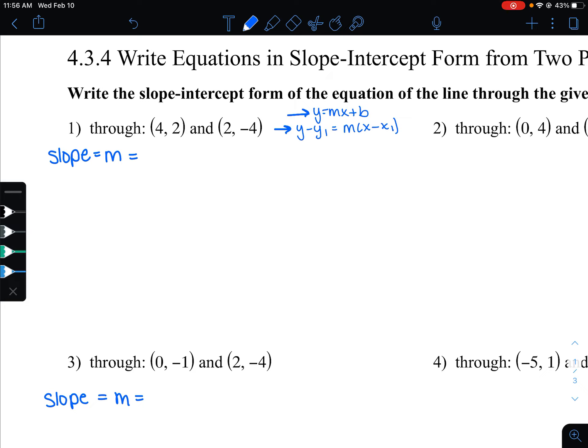So we have two points in this first example. The first thing I want to do is label them as x1, y1, x2, y2.